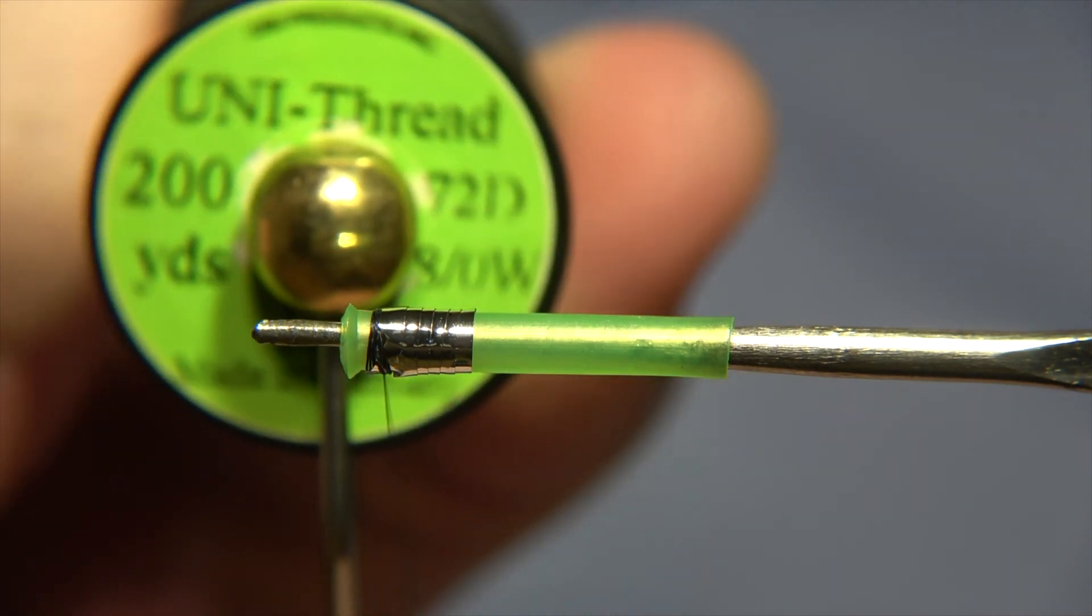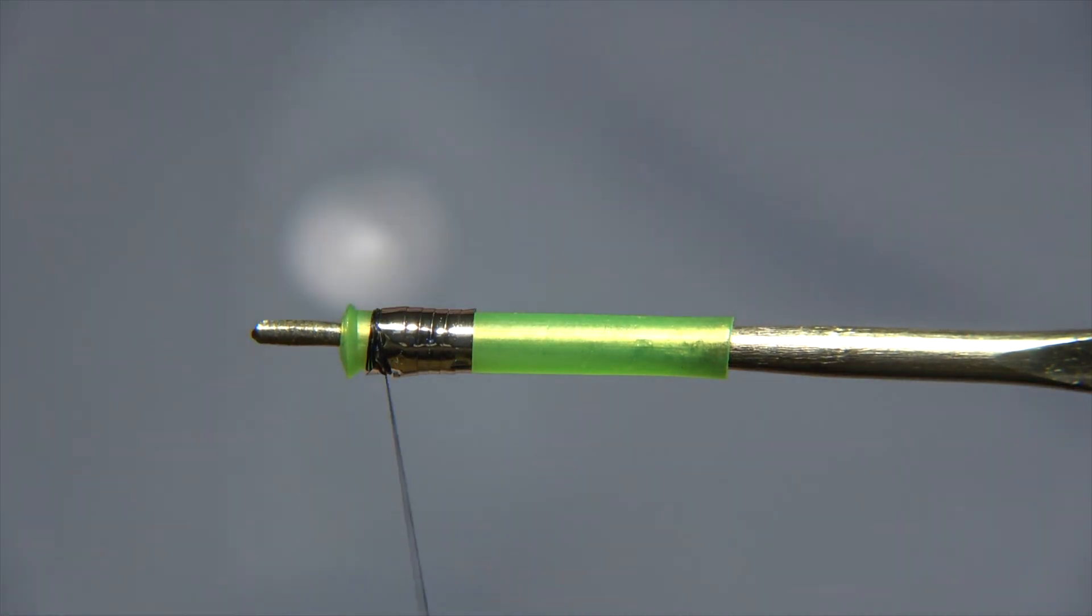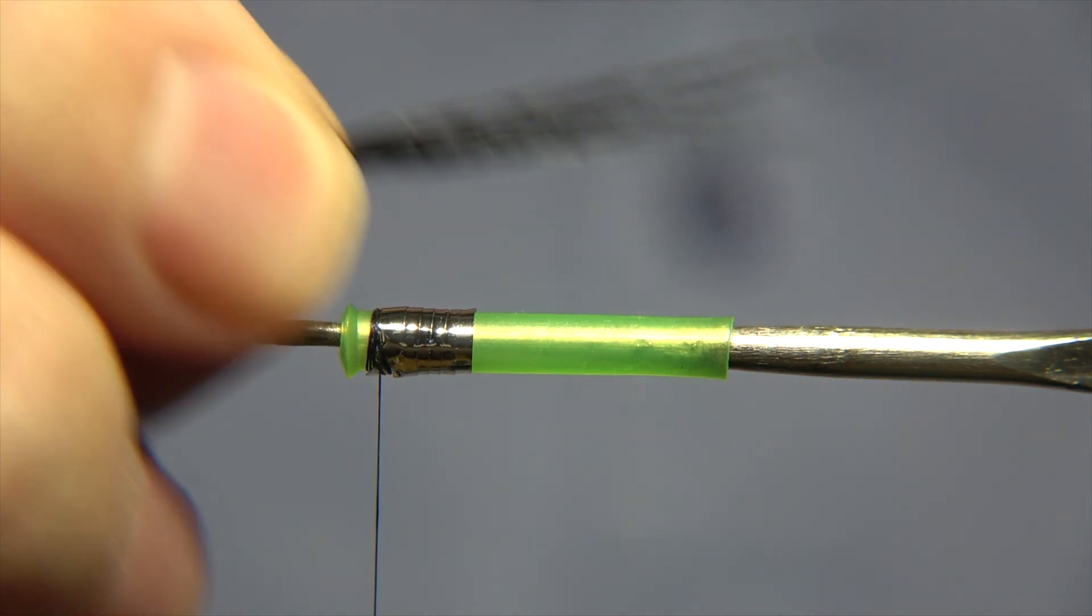The thread I'm using is a black 8-0 uni, like almost always, but there are sometimes threads which are like flat threads which are better for some other types of flies.